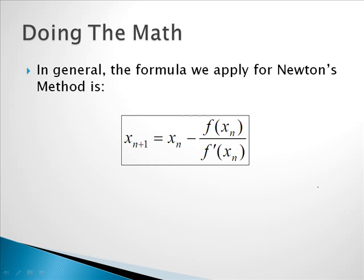Let's finish by talking about the math and the formula for Newton's method. The formula is: x_{n+1} = x_n minus f(x_n) divided by f'(x_n). This is a recursive definition because the (n+1)th step depends on the nth step. To know x5, you have to first figure out x4; for that you need x3; for that you need x2; and for that you need x1. Each step depends on the previous one. This formula comes about from the slope of a tangent line.